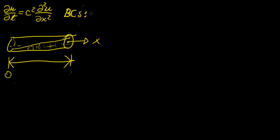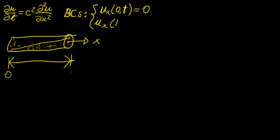We're now going to consider the case where the first partial derivative with respect to x at the point (0, t) equals zero, and also the partial derivative with respect to x at the point (l, t) equals zero. This is basically saying that the heat flux or heat traveling in and out at the boundaries is zero — no heat is coming in or out of this rod.